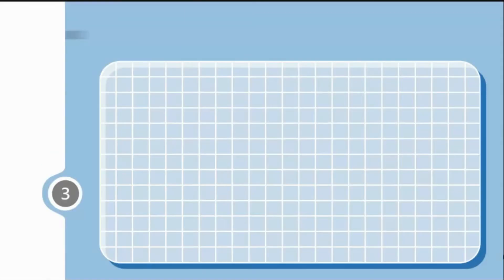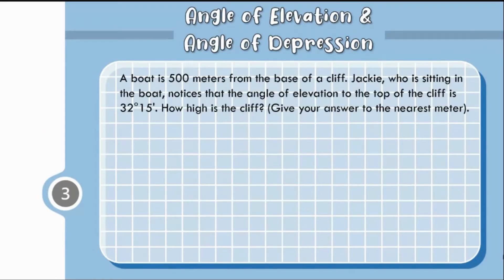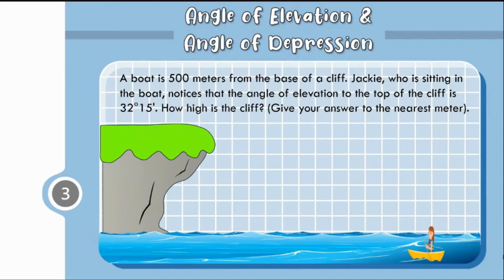Let us have example number 3. A boat is 500 meters from the base of a cliff. Jackie, who is sitting in the boat, notices that the angle of elevation to the top of the cliff is 32 degrees and 15 minutes. How high is the cliff? Give your answer to the nearest meter. Let us draw a sketch illustrating this situation. We have here a boat and a cliff. From the problem, the boat is 500 meters away from the base of the cliff.